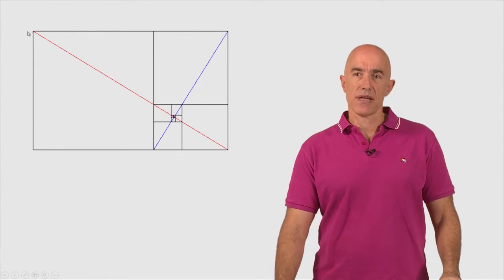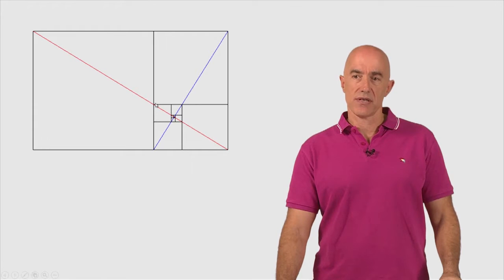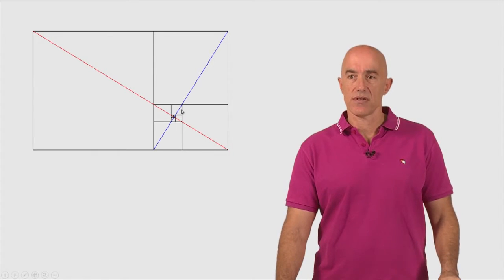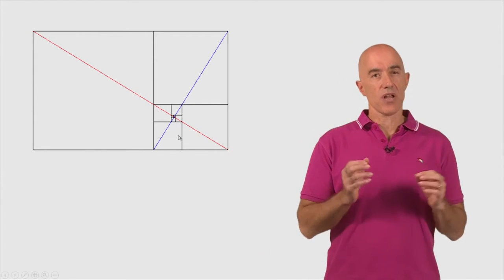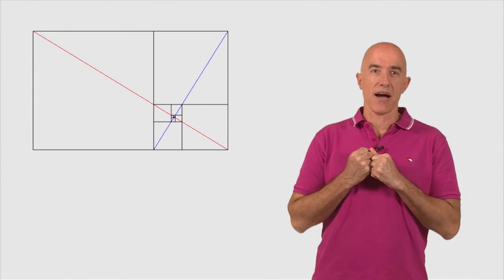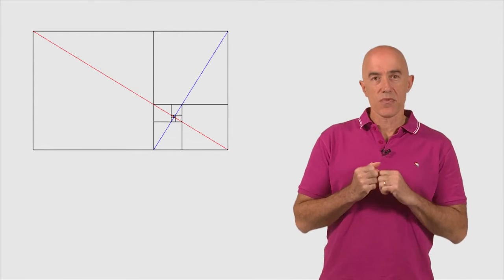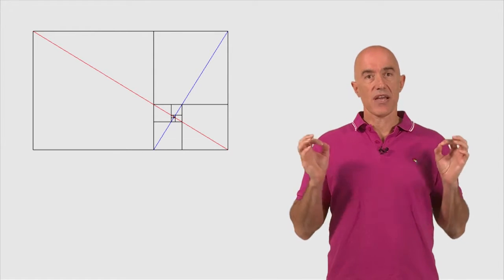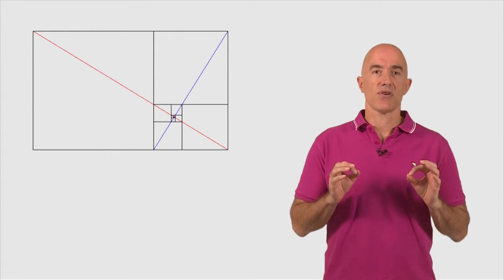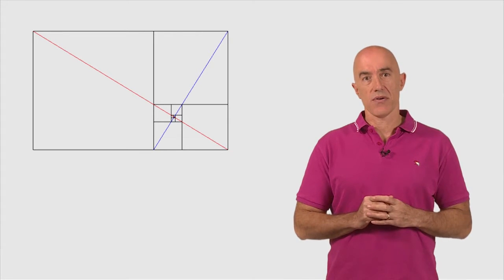So if you can show that this diagonal crosses the corners of this rectangle, these two corners, and this blue diagonal line crosses the two corners of this slightly smaller rectangle here, then those diagonal lines have to go all the way down into the accumulation point of our spiraling squares. And their intersection point then is the center of our golden spiral.